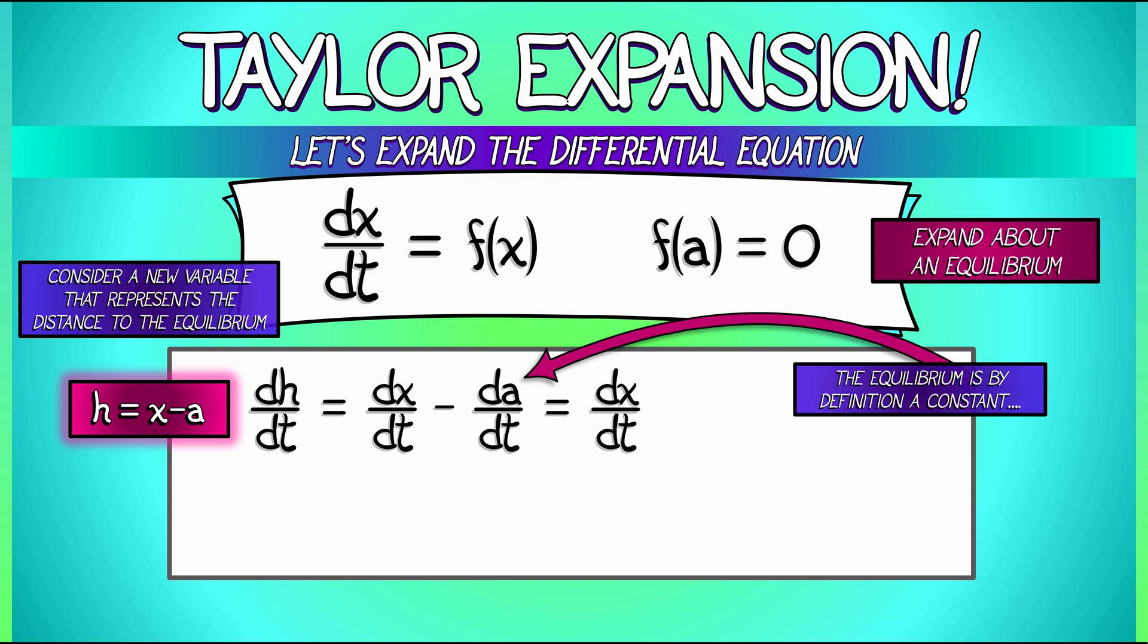We know from the ODE that dx/dt is f of x. So what do we have? We have dh/dt, the change in the perturbation, equals f of x. But wait, what's f of x?